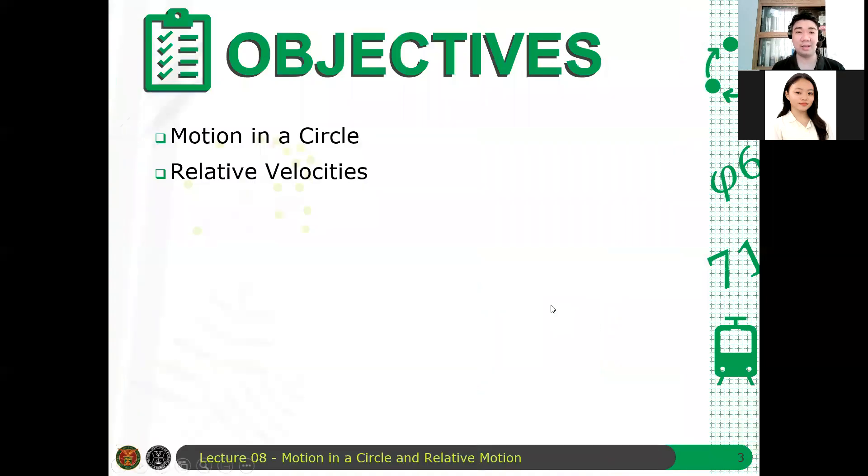So here's an outline of the discussion. First, we discuss motion in a circle. So we will differentiate between uniform circular motion and non-uniform circular motion. But we will focus on solving problems involving uniform circular motion because it's easier. Apparently, when non-uniform circular motion, the equations are complicated.